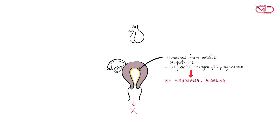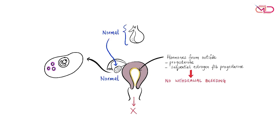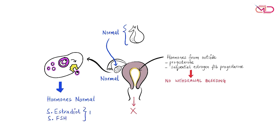The hypothalamo-pituitary-ovarian axis is functioning normally. Follicular growth and ovulation are occurring fine, so the hormone levels — that is the serum estradiol and serum FSH levels — are in the normal range.